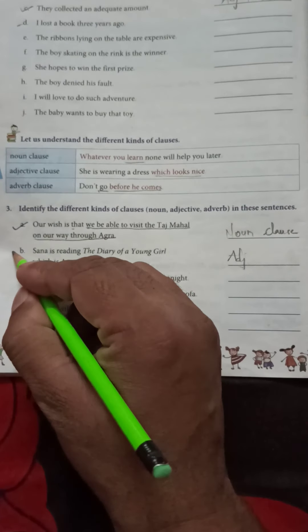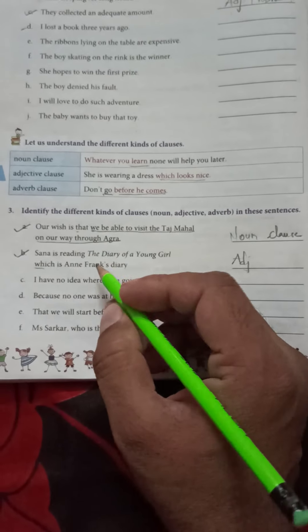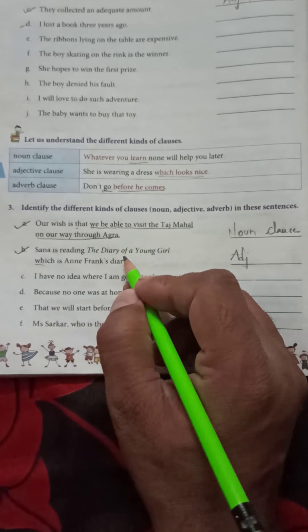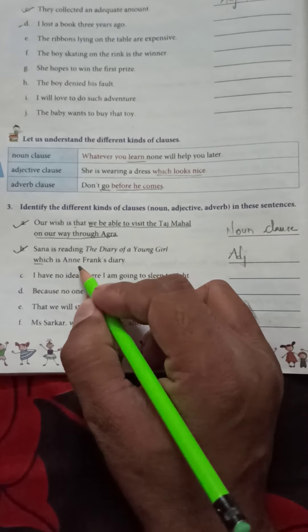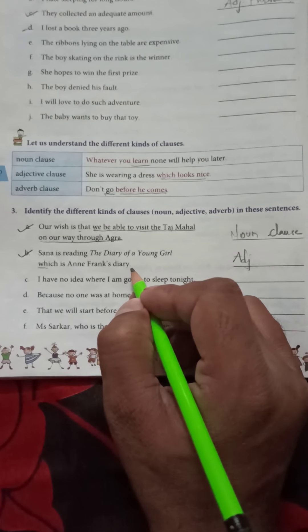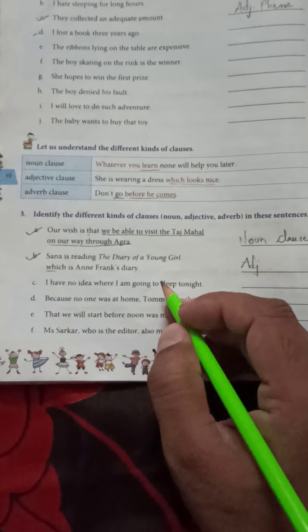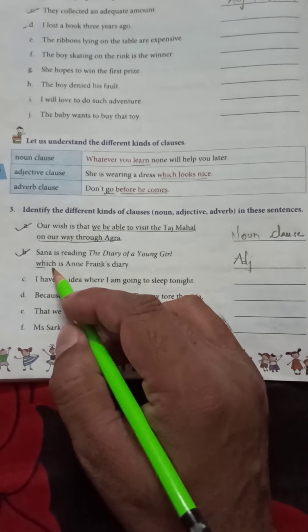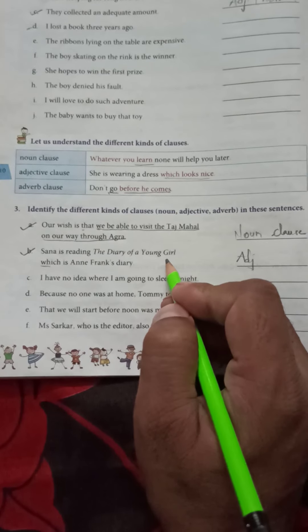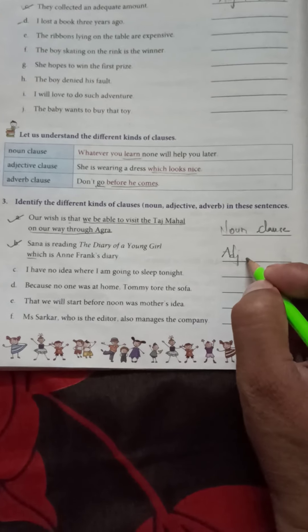Now second one. Sana is reading The Diary of a Young Girl, which is Anne Frank's diary. In the second sentence, 'which' is qualifying the Diary of a Young Girl, so this is adjective clause.